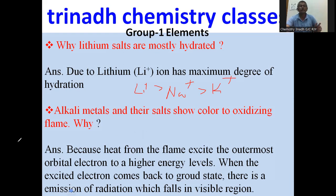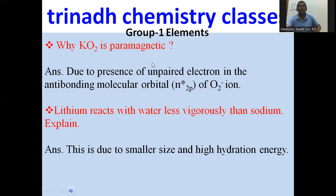Next, alkali metals and their salts show color to an oxidizing flame. The reason is because the heat from the flame excites the outermost orbital electron to higher energy levels. When this excited electron comes back to the ground state, there is emission of radiation which falls in the visible region. Next: why is potassium superoxide, KO2, paramagnetic?